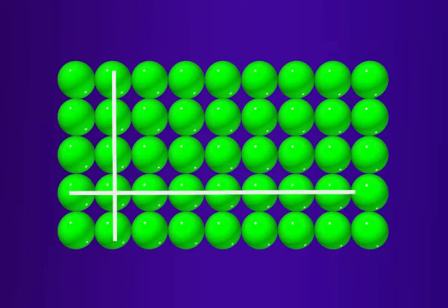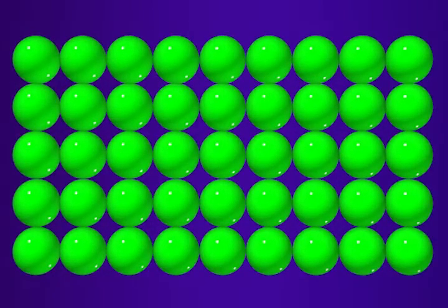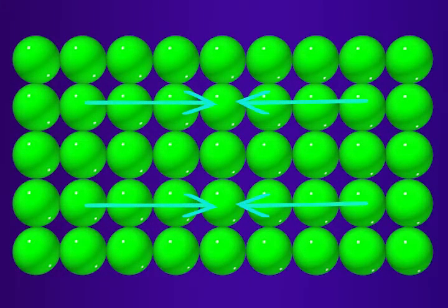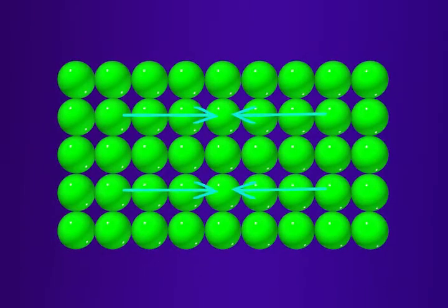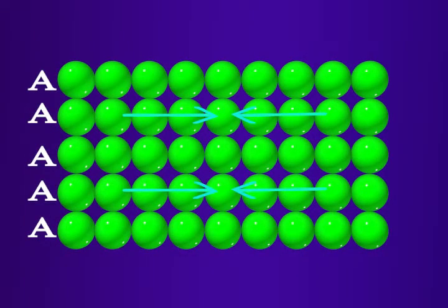Then place a few more rows of spheres such that in each row, the spheres are aligned horizontally and vertically. Each row is similar to the row above and below it, so each row can be named as A type row. This arrangement is called AAA type arrangement.